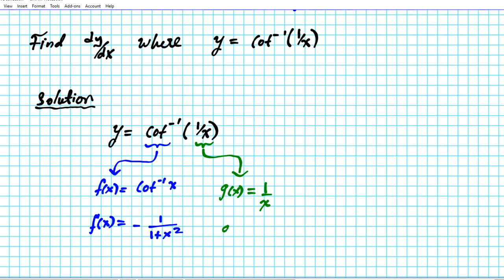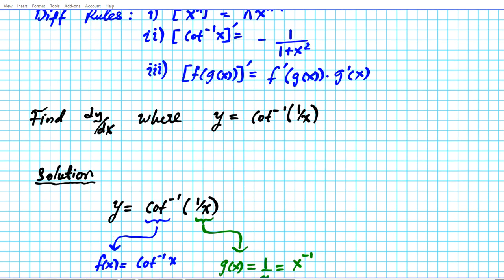Now for the derivative of the inner function — the derivative of 1 over x. You might be tempted to use the quotient rule here, but wherever possible, if you can rewrite the function to avoid the quotient rule, please do that. It will save you time and it's less risky. We can apply the reciprocal property of exponents and rewrite 1 over x as x to the negative 1, then apply the power rule. So n is negative 1, and the derivative will be negative x raised to negative 2, which can be written as negative 1 over x squared. So the derivative of 1 over x is negative 1 over x squared.